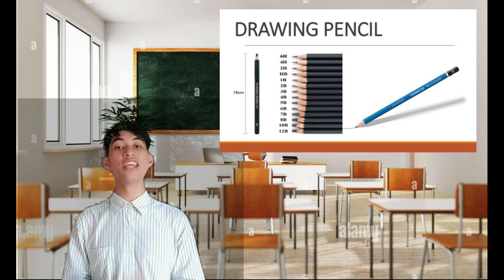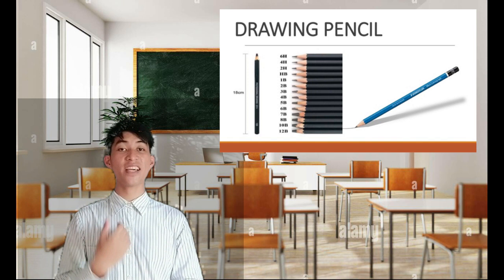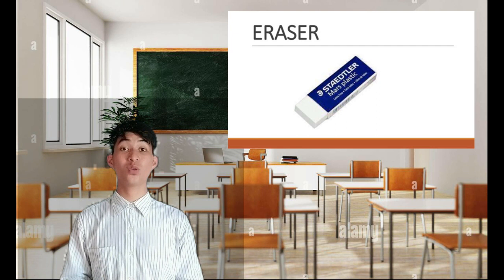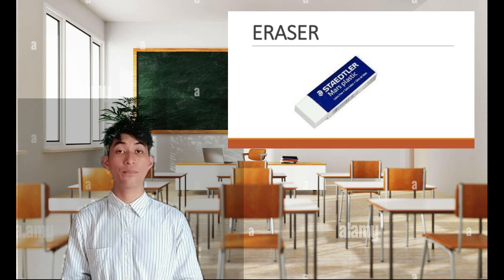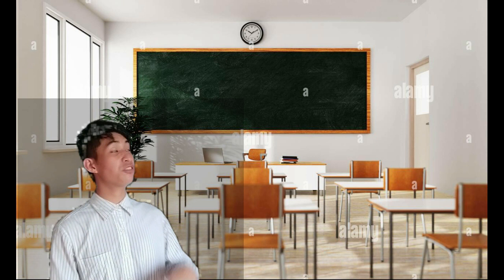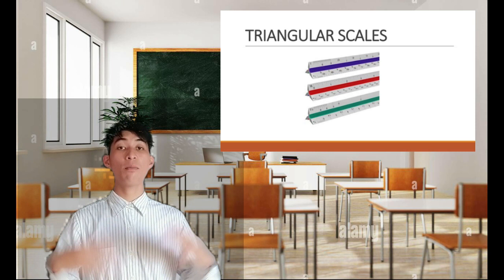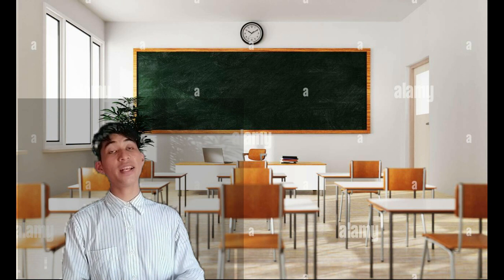The next one is the Eraser, a material used to clean dirt off the drawing. Soft and hard erasers are examples. Next is the Pencil Sharpener, a tool used to sharpen the pencil and maintain it pointed. The next one is the Triangular Scale, a tool generally used when reproducing a drawing in enlarged or reduced form to some proportion. Its main function is to reproduce the measurement of an object in full size, reduced size, or enlarged size. Next is the Eraser Shield, a tool made up of thin metal with regular holes.